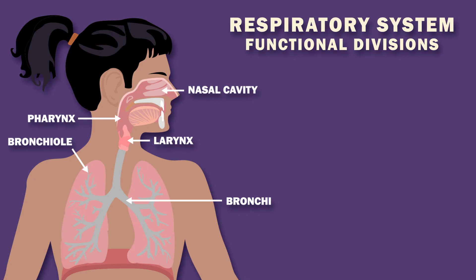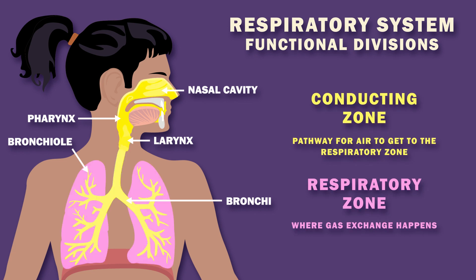The respiratory system can be partitioned into divisions functionally. Respiratory and conducting zones are shown. The nose, pharynx, larynx, bronchi, and bronchioles make up the conducting zone.